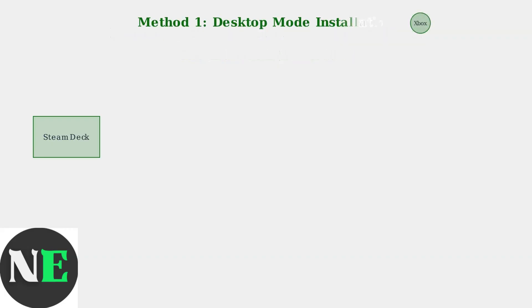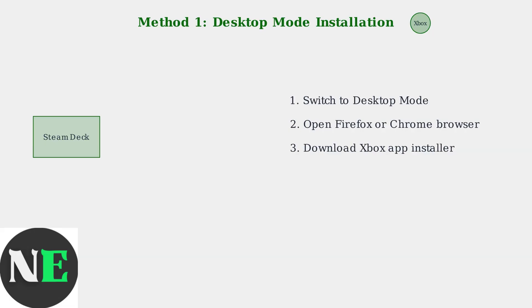The most common method is through desktop mode installation. This involves switching your Steam Deck to desktop mode, downloading the Xbox app using a web browser, and adding it as a non-Steam game for easy access.